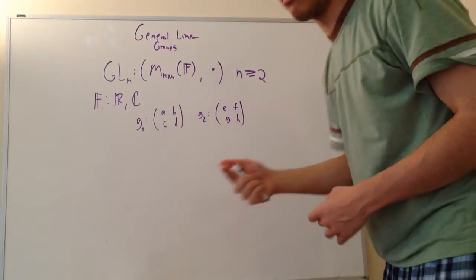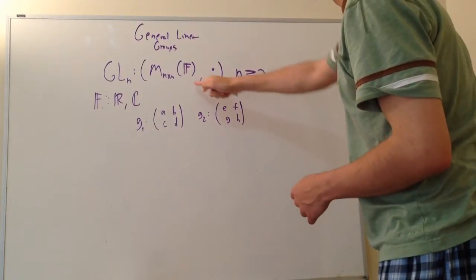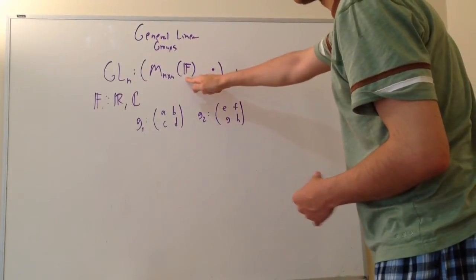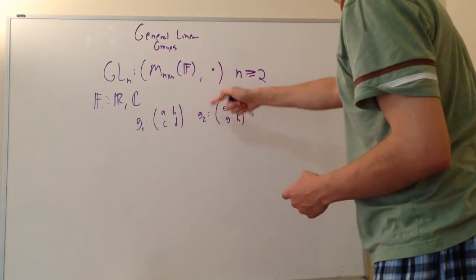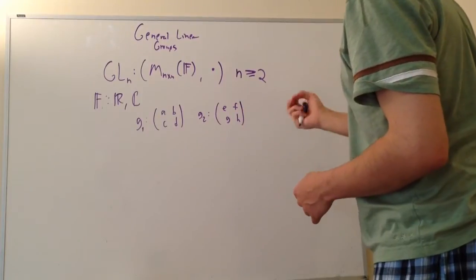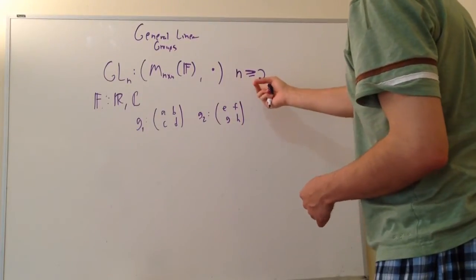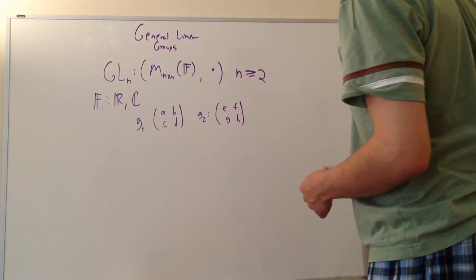For now, just think of the field as the real or complex numbers — real matrices or complex matrices — and under multiplication, this forms a group. And of course, n is greater than 2; your dimension has to be greater than 2.